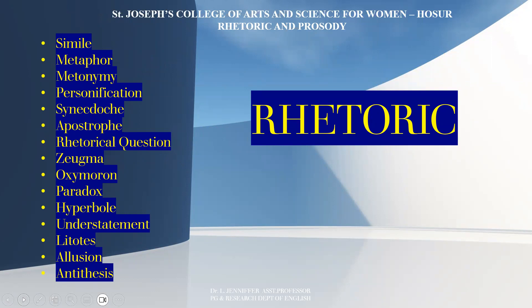Let us see the figures of speech which are a part of rhetoric. Simile: a comparison between two distinctly different things is indicated by the words 'like' or 'as', thus bringing similarity between dissimilar things. Metaphor: a word or phrase used in an imaginative way to describe something. In order to make the description powerful, we use metaphors. The difference between simile and metaphor is that in simile we use the words 'like' or 'as', but in metaphor it would be a direct comparison.